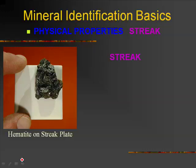Another good property to use for mineral identification is streak. Streak is defined as the color of a mineral's powder — not the color of a mineral, but of its powder. You figure out the color of its powder by putting it on what's known as a streak plate, which is just a ceramic tile.